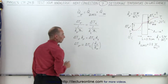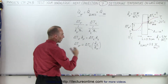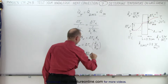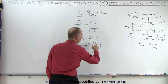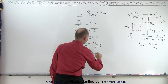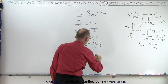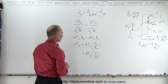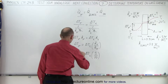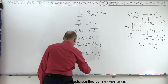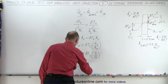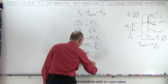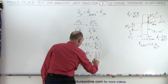Plugging in the values, H_inside is 5 and H_outside is 10, so delta T_outside equals delta T_inside times 5/10. That means delta T on the outside is equal to one half of delta T on the inside.